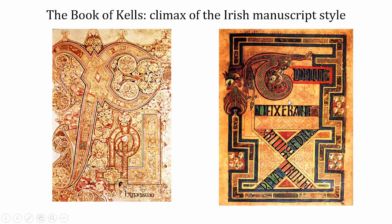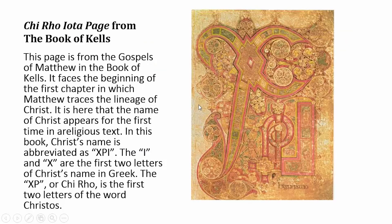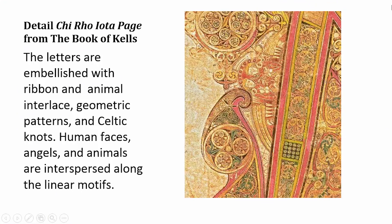The last book I want to look at from Ireland is the Book of Kells, which is really the climax of the Irish manuscript style. This is called the Chi Rho page — it's the place where the name of Christ appears for the first time in a religious text, which is interesting. Chi Rho is abbreviated as XPI, the first two letters of the word Christos. Here is a detail — there are so many details in this. They're all embellished with ribbon and animal interlace, all sorts of geometric patterns, Celtic knots. You can see, coming out of the stem of the letter, faces peeking out, all sorts of angels and animals interspersed among these motifs. You can take a magnifying glass and spend quite a long time finding so many different details.